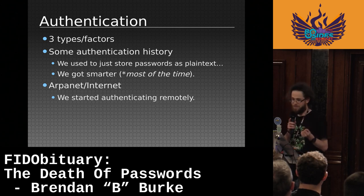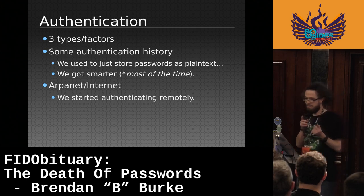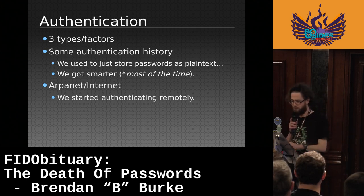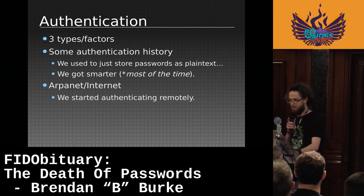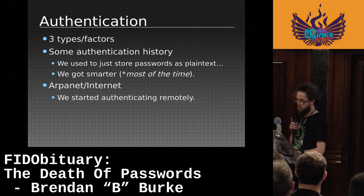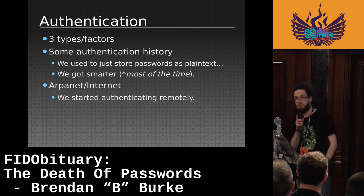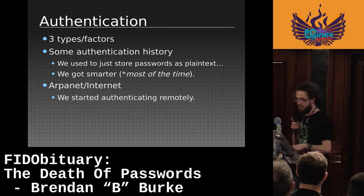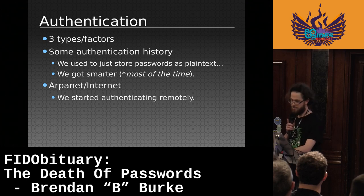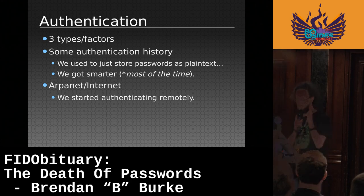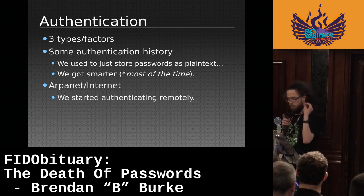So we used to just store passwords as plain text, and there are some obvious issues here — students could work out what was on the upcoming test, see if there was homework. So we got smarter, most of the time. Crypt was invented for Unix systems in 1973 by Robert Morris Sr., working for the NSA. You might know his son, Robert Morris Jr. Crypt was great for authenticating locally, but then we invented the internet and started authenticating users remotely, sharing secrets across the wire to authenticate. What could possibly go wrong?